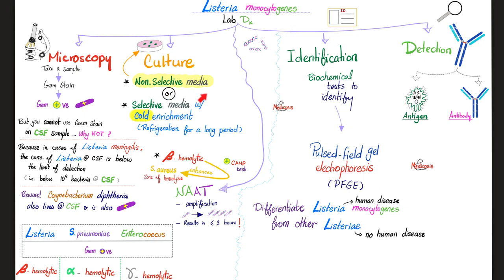You can culture it on non-selective media or selective media with cold enrichment. Remember that Listeria can grow in cold temperature, especially in your refrigerator. When you add Listeria, which is beta-hemolytic, to Staph aureus, which is also beta-hemolytic, they enhance each other, and the zone of hemolysis of Staph aureus will get bigger after you add Listeria. We call this the positive CAMP test. Identification by biochemical techniques, such as pulsed field gel electrophoresis, is needed to differentiate Listeria monocytogenes, which causes human diseases, from other forms of Listeria that do not cause human diseases.